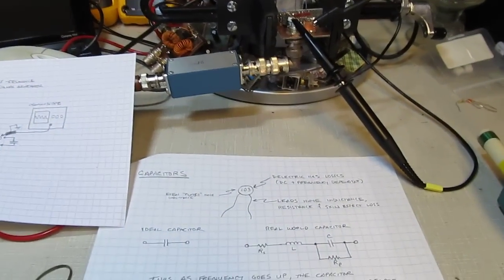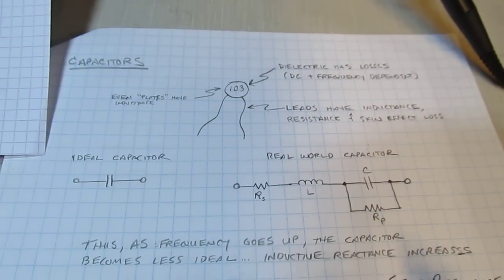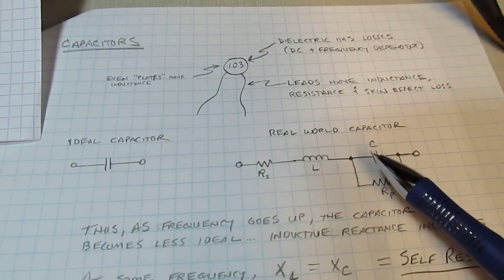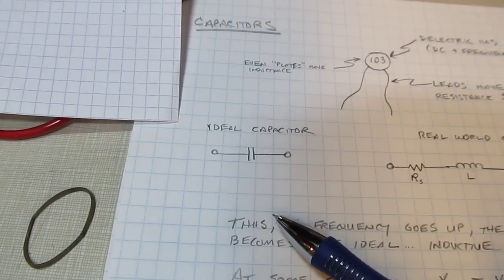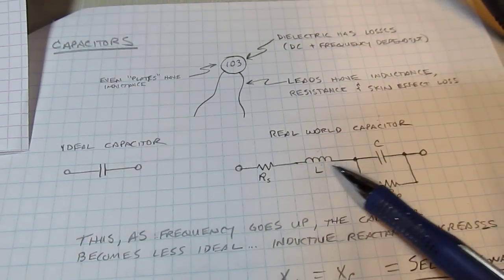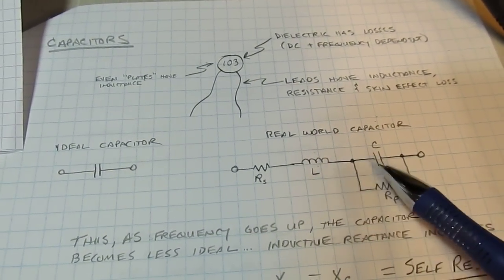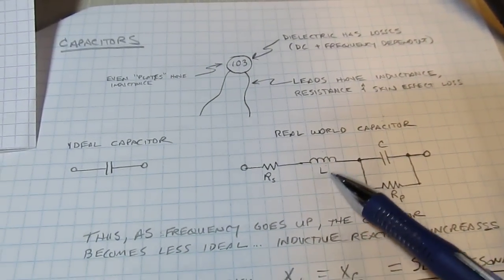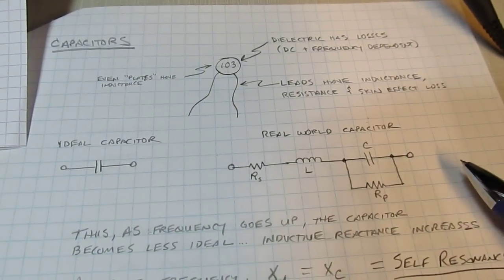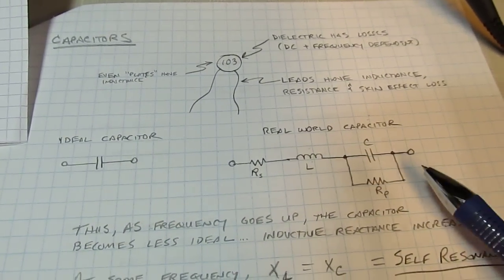I did a video several months ago on self-resonance and I'll quickly review some of that here — I'll post a link in the show notes. The bottom line is that a capacitor ideally looks like just a single capacitor, but in reality has parasitic components: parasitic resistance, leakage, and primarily parasitic inductance in series. At some frequency the reactance of the parasitic inductance equals the reactance of the capacitor itself — that's the self-resonant frequency — and a series resonance circuit looks like a dead short.